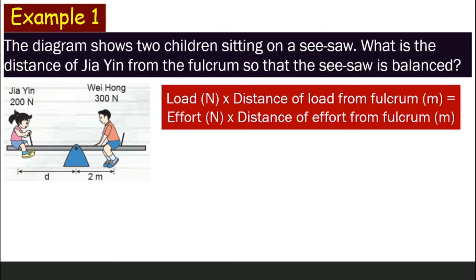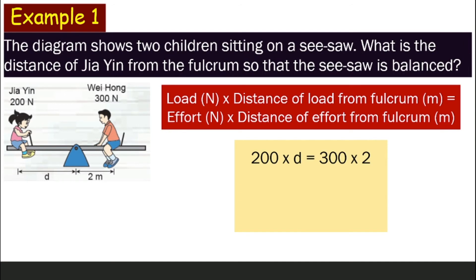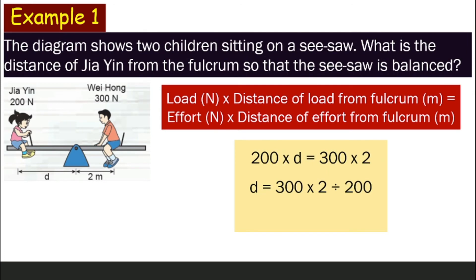Using the principle of moments — moment of one side equals moment of the other side — we get: 200 N × d = 300 N × 2. So d = (300 × 2) ÷ 200. Therefore d = 3 meters. That is Jia Yin's distance from the fulcrum.